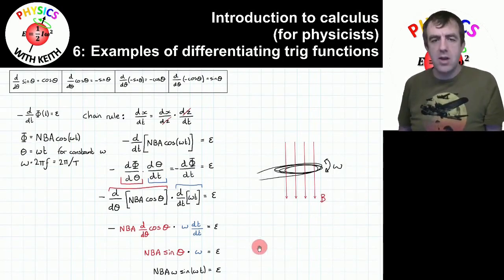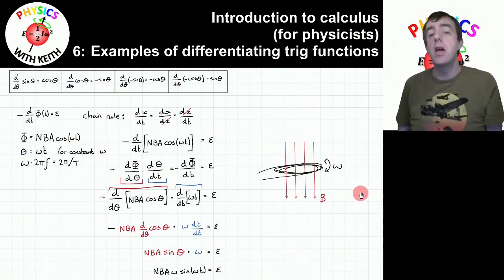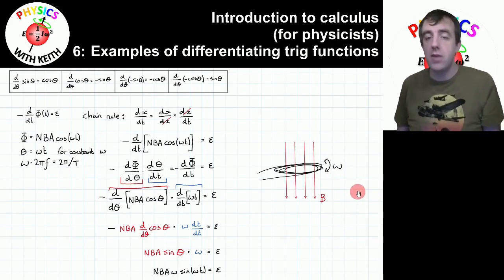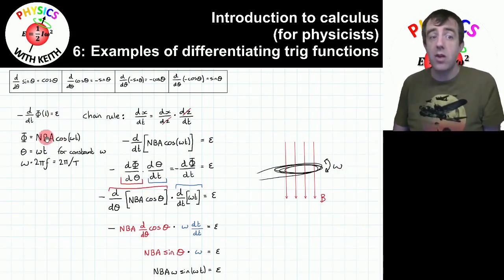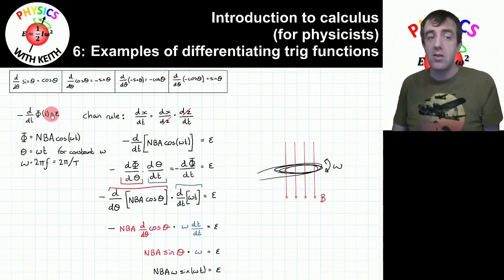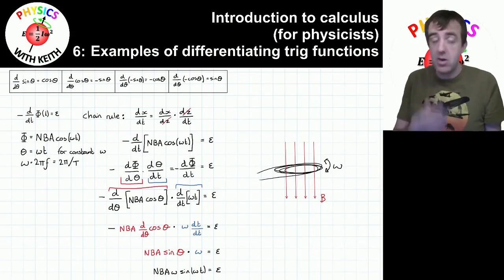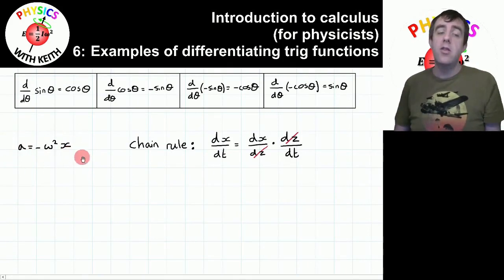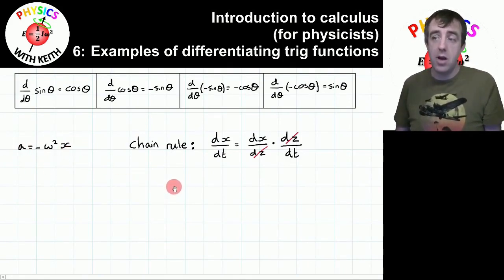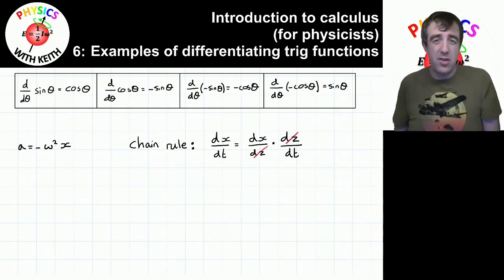Just a reminder that that equation at the bottom is for a coil rotating in a uniform magnetic field. If you have some other sort of electromagnetic paradigm, you'll have to use some other sort of equation, but you can come up with that equation yourself. As long as you know how phi varies with time, you can plug that into this differential equation and find what the EMF is at a particular time by differentiating. And so the second example is deriving the definition of simple harmonic motion.